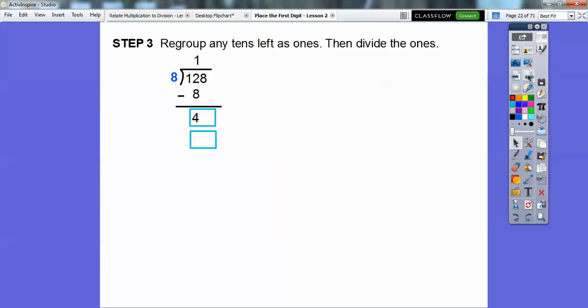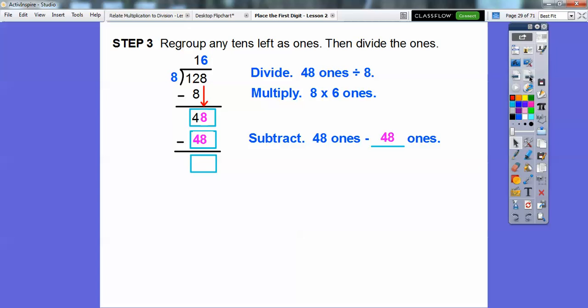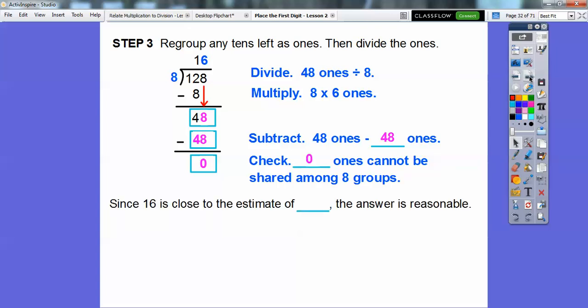So we're going to regroup any tens left as 1s, and then divide. So we'll slide that 8 down right there, and then we'll divide 48 1s by this 8. Well, that goes in there 6 times, so then we multiply 8 times 6 1s, gets us 48. Then we subtract, we're going to subtract the 48 1s minus the 48 1s, that's going to give us 0 1s. And so 0 1s can't be regrouped among the 8 groups. So we're done right there. When we get 0 and there's nothing down to carry anymore,